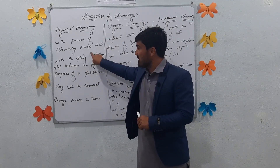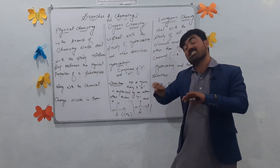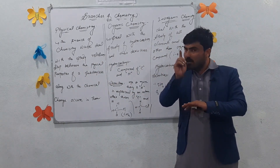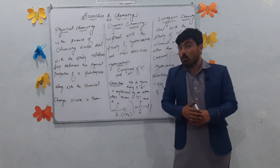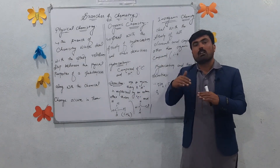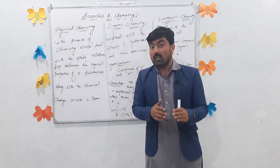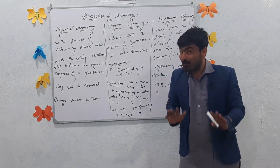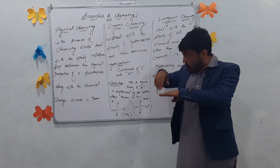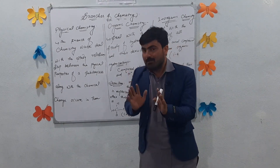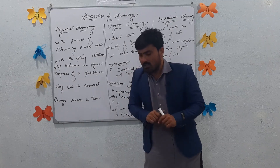A branch of chemistry which deals with the study of the relationship between the physical properties of a substance and chemical change — because when a substance undergoes chemical change, the physical properties change. For example, color is a physical property that changes, or the boiling point changes. If we change the physical properties, we can study the chemical composition. We can study the relationship between chemical change and physical chemistry.